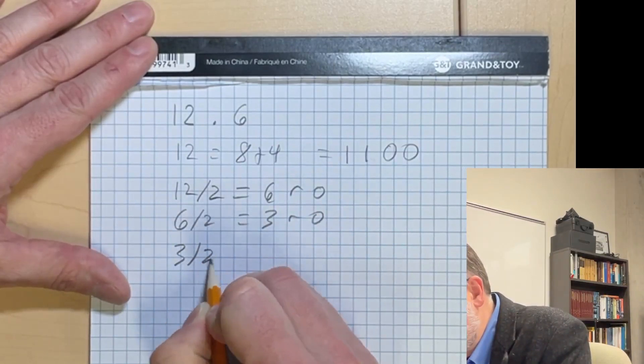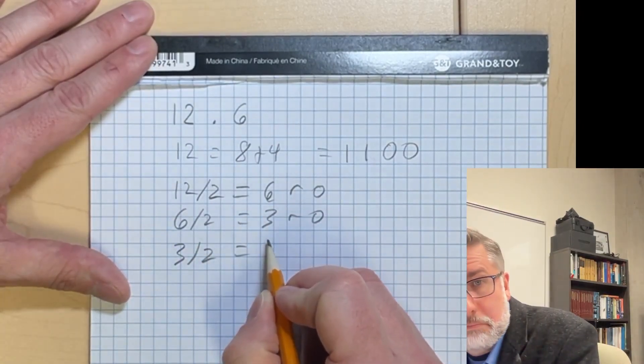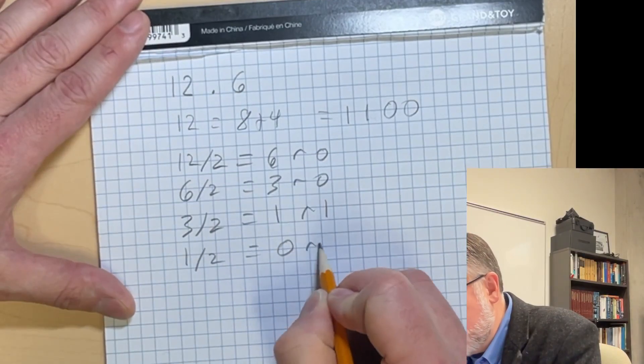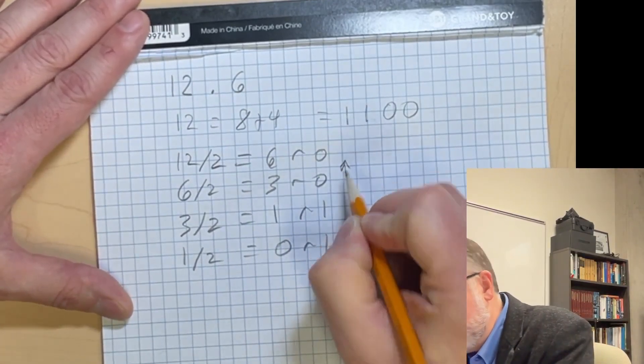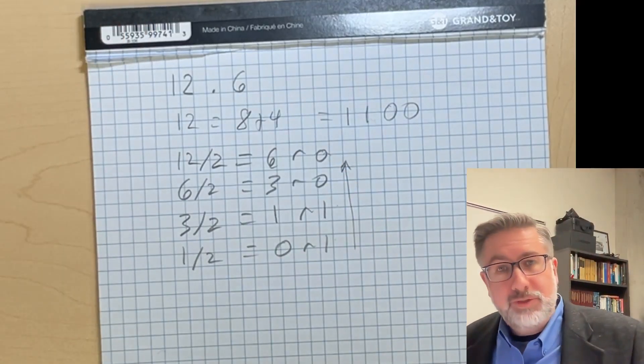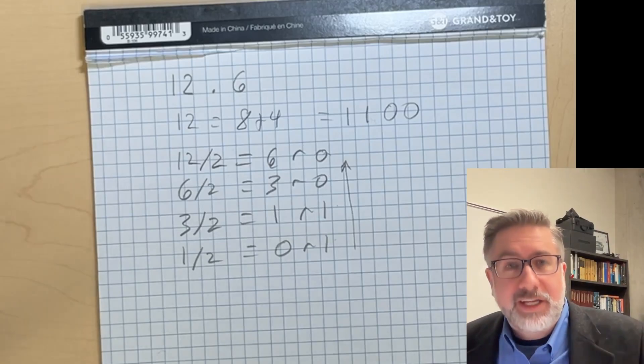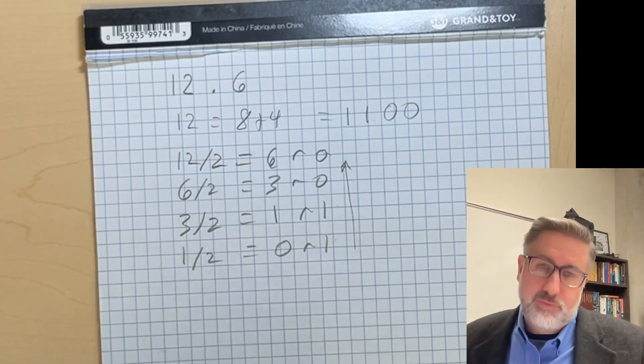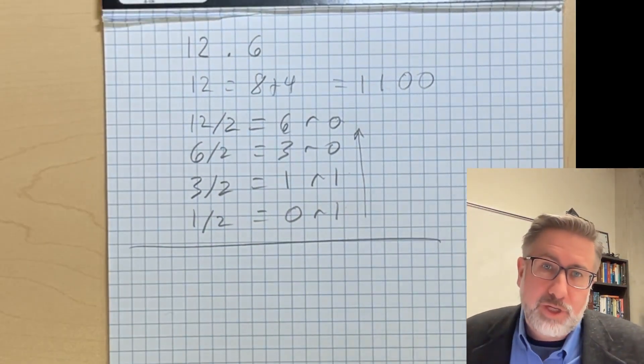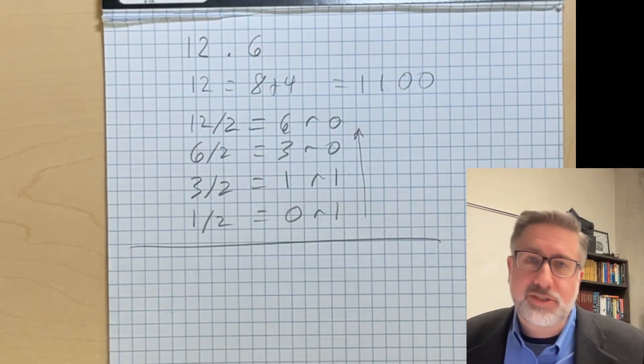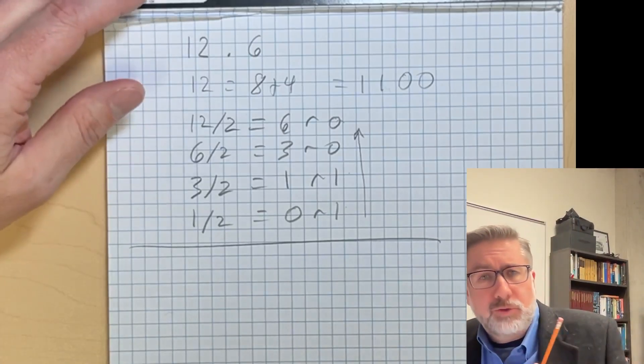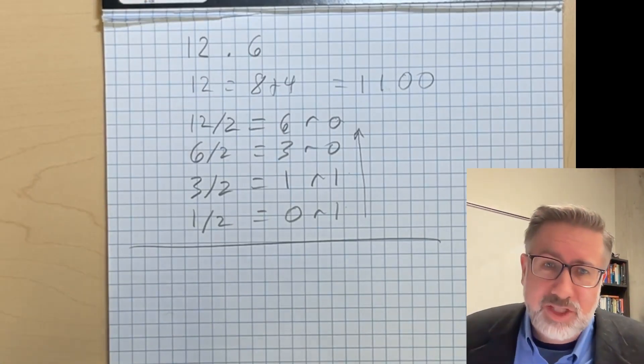3 divided by 2 is 1 remainder 1, and then we read from the bottom up and that's our 1100. So that's how we convert from an integer to a binary number. Now if we want to convert from a fractional number 0.6, we're going to do the same thing except do it in reverse. So we're going to do multiplications instead of divisions and then we're going to read from the top down instead of the bottom up. The key here is we have to split it in half.